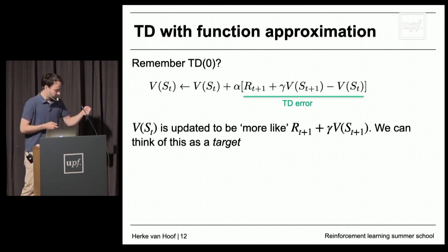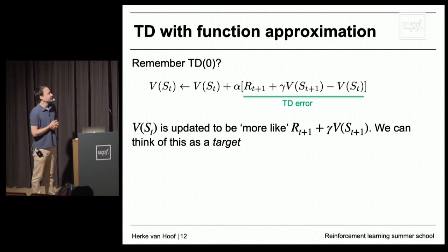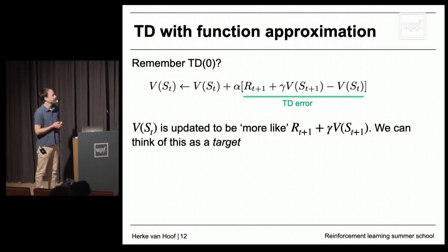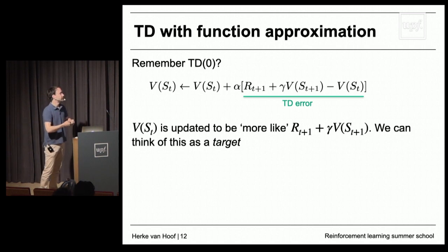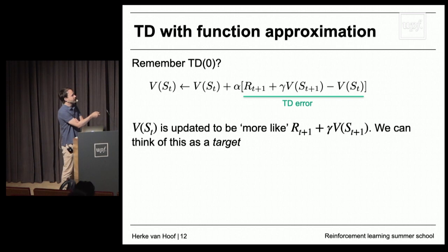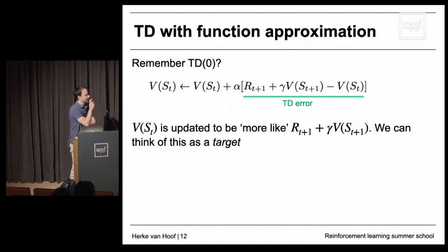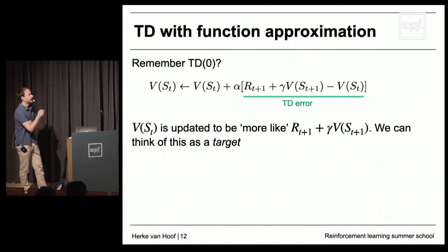Before going into how we can actually learn these value functions, let's quickly revisit tabular TD(0). For every state, we maintain a value, and every time we get a new transition in the environment, we update that value with a learning rate. We get a TD error term. Looking more closely at this update, we can distinguish two parts: the current value of the state according to the learned value function, and the term R plus gamma times V — that's a kind of target we would like V to be closer to.